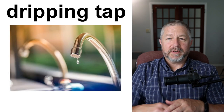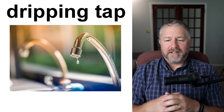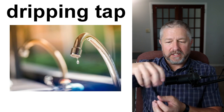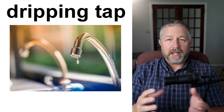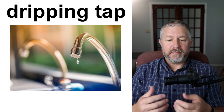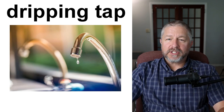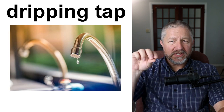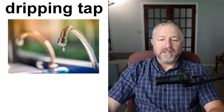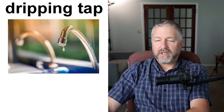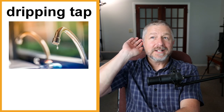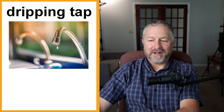Dripping tap. I actually fixed a dripping tap the other day — I took the tap off, put a new rubber seal inside, and now it doesn't leak anymore. If you have a dripping faucet or dripping tap, usually it just means you need to put in a new little rubber seal on the inside. Then you will have fixed the dripping tap and you won't hear that drip, drip, drip at night coming from the bathroom.